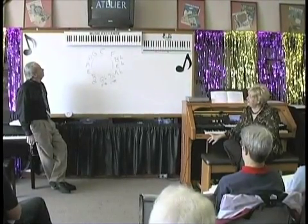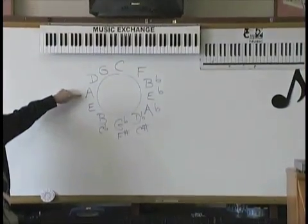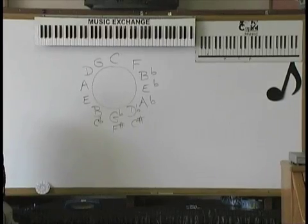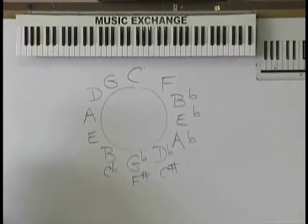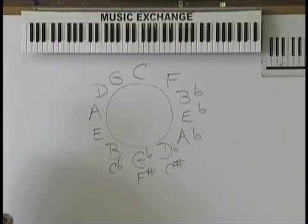Key of C is the major. What's the relative minor? A minor. Right. Now, just like the key of C, one to the right and one to the left are the keys, the minors that go with it.